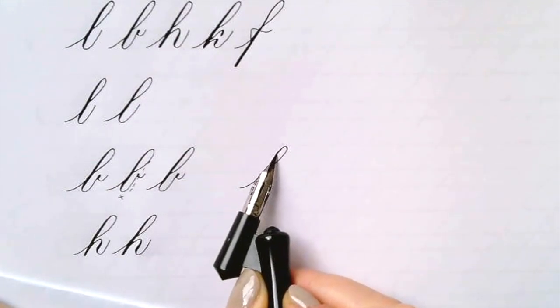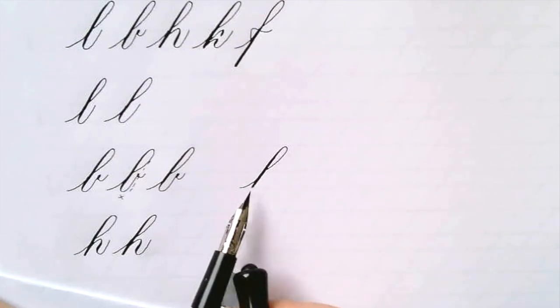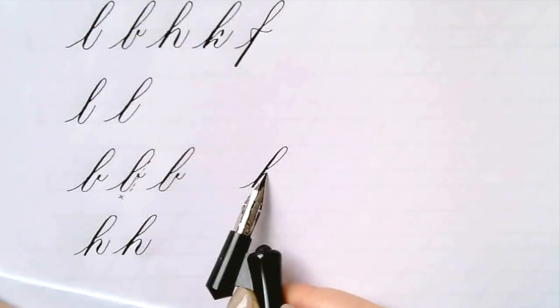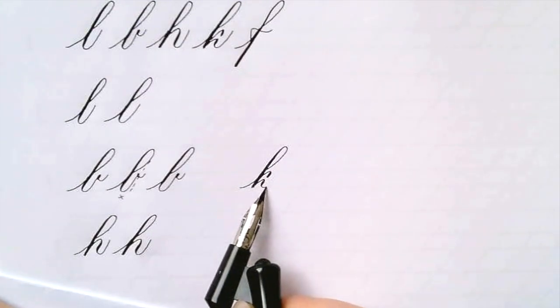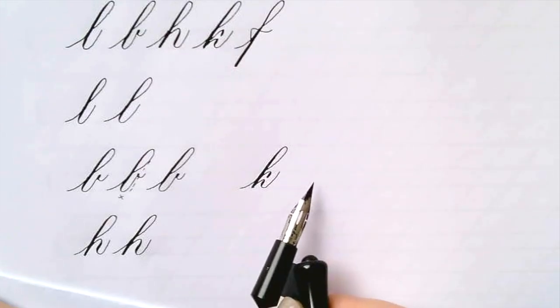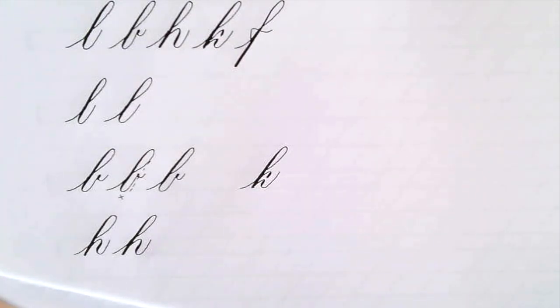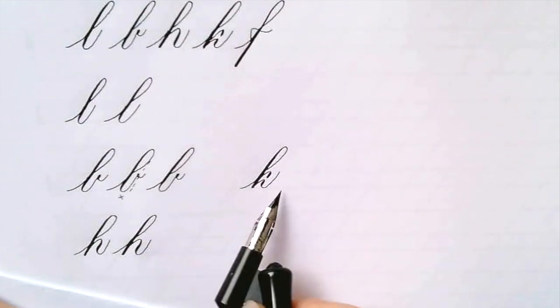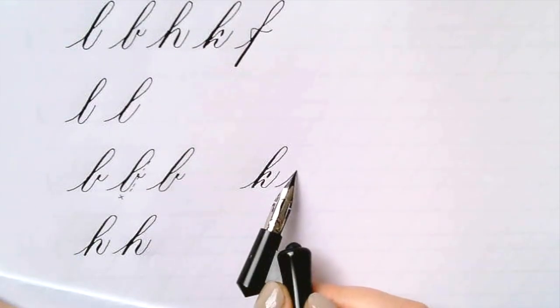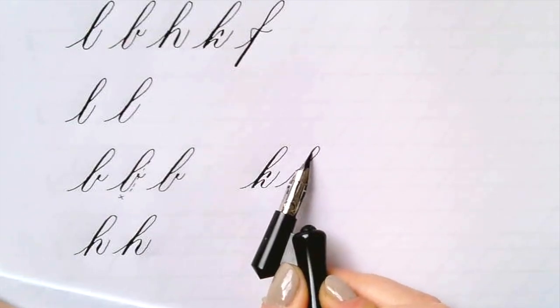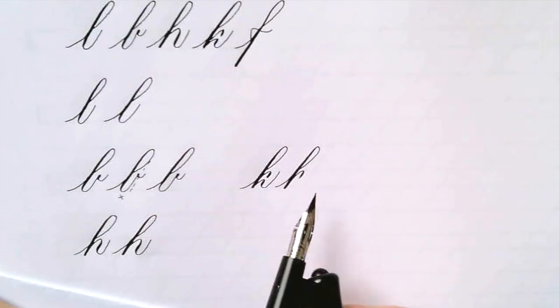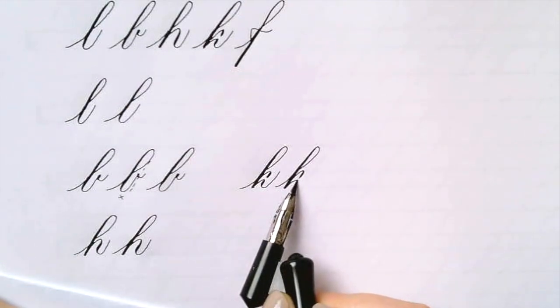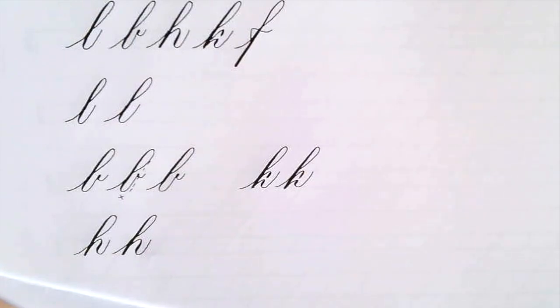Now the K can be made in various different ways. The traditional way has a couple of flicks here, you have one arm flick and another arm flick. We're going to start like the H, just do the overturned loop and then stop. From the baseline, come up to the waistline and do a little flick downwards, and then go back to the baseline and come up to about the center of the X height and do another little flick down like that.